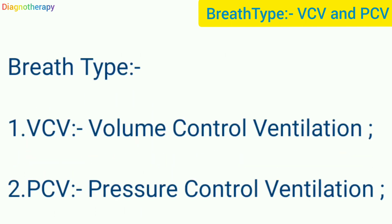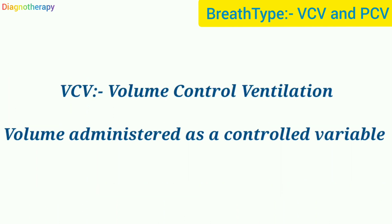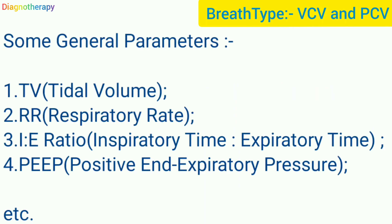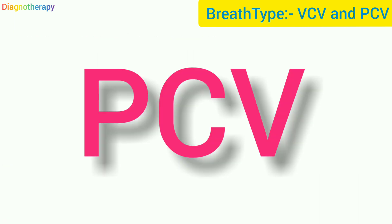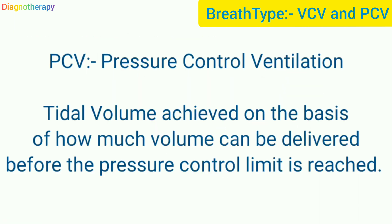In this video we will be concentrating on the breath types: volume control ventilation and pressure control ventilation. In volume control ventilation, volume is administered as a controlled variable. General parameters include tidal volume, respiratory rate, I:E ratio (inspiratory to expiratory time ratio), and PEEP (positive end-expiratory pressure). Different ventilators and models may have slightly different settings.